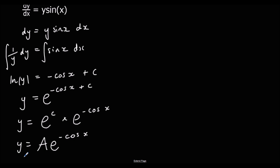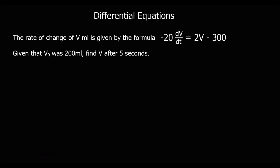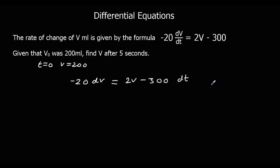Now we're going to look at a differential equation in context. We're told the rate of change of volume V in millilitres is given by −20 dV/dt = 2V − 300, and at t = 0, V = 200. We'll use that initial condition to find c. We separate variables: multiply out to get −20 dV = (2V − 300) dt, then divide both sides by (2V − 300).